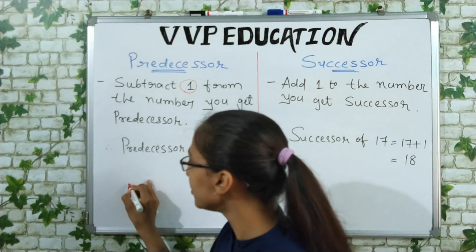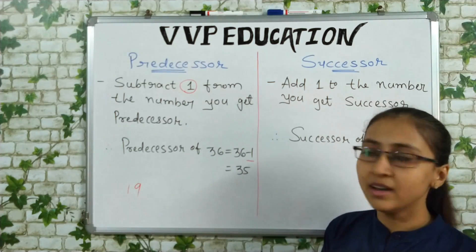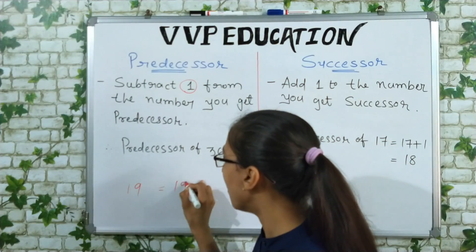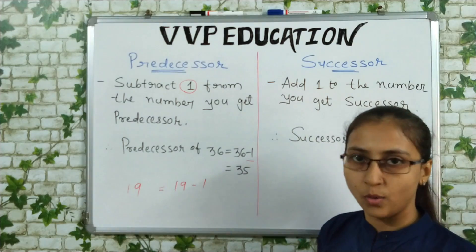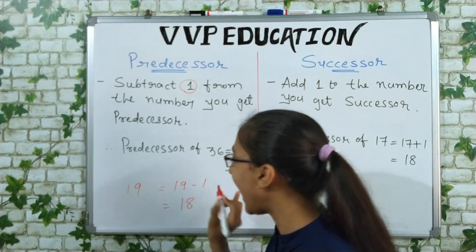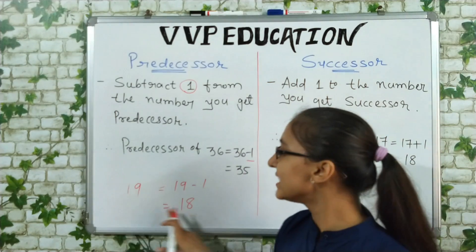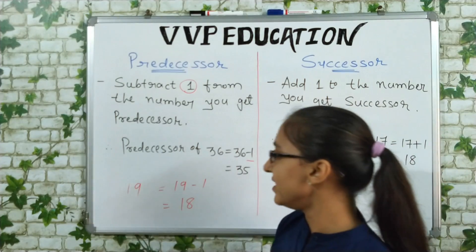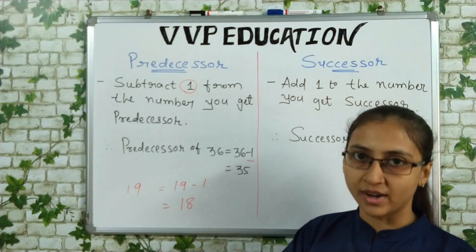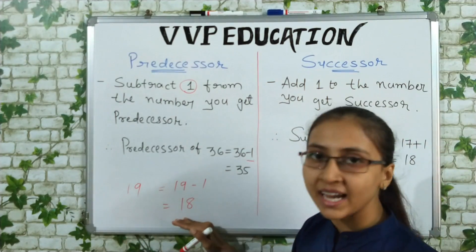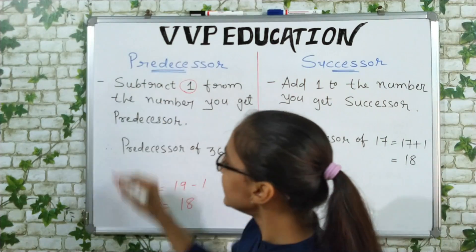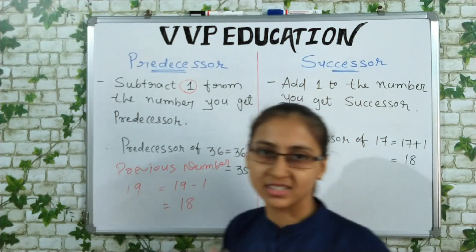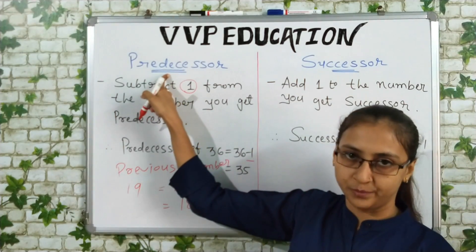Let's take another example. Suppose I have number 19 and I have to find the predecessor of 19. So we just have to do 19 minus 1, which gives 18. That means predecessor of 19 is 18. In short, predecessor means the previous number — whatever number you have, the number before it on the number line is its predecessor.